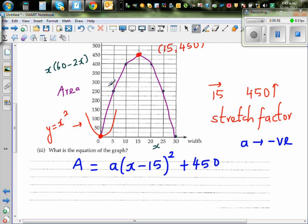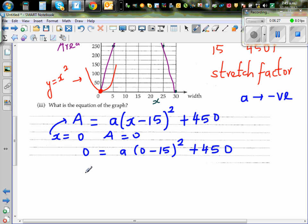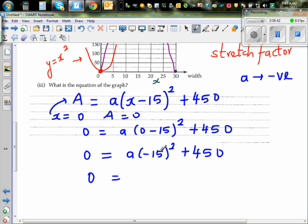To find a, you have to put any point on this parabola in this equation. The easy point is 0, 0. When x is 0, your area is also 0. So let's put this back in the equation. 0 equals a times 0 minus 15 squared plus 450. This is 0 equals a times negative 15 squared plus 450.